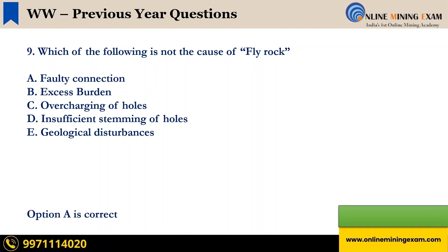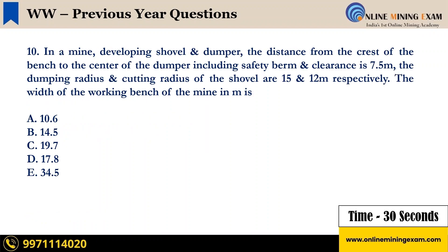Time up. The correct answer is A: Faulty connection. Next question. In a mine, developing shovel and dumper, the distance from the crest of the bench to the center of the dumper including safety berm and clearance is 7.5 meter. The dumping radius and cutting radius of the shovel are 15 and 12 meter respectively. The width of the working bench of the mine in meter is — A: 10.6, B: 14.5, C: 19.7, D: 17.8, E: 34.5. I will allow 1.5 minutes for this question. Your time starts now.